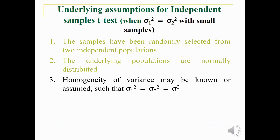The assumptions of the independent t-test are: samples are randomly selected from two independent populations; the underlying populations are normally distributed — since t-test is a parametric test, the population must be normally distributed; and homogeneity of variance must hold, meaning sigma one squared should be equal to sigma two squared. The variance of population one and population two should be the same.